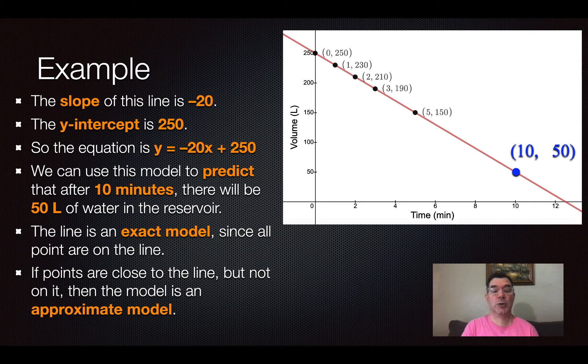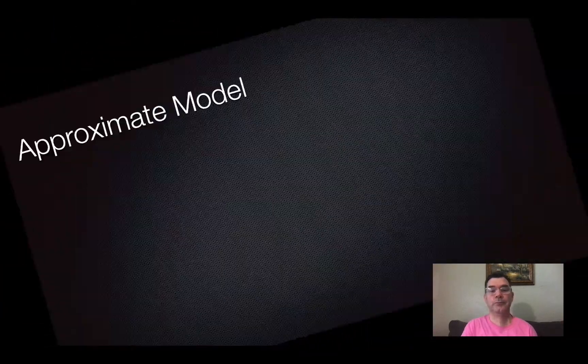If the points are close to the line, but not on it, then we don't say it's an exact model. We say it's an approximate model.